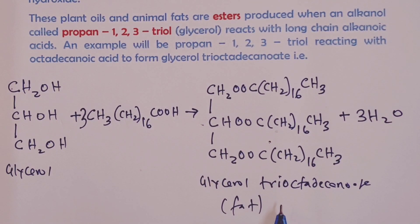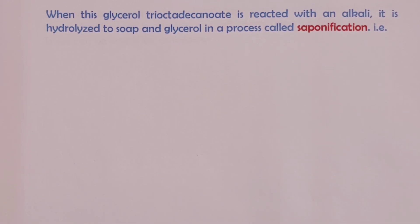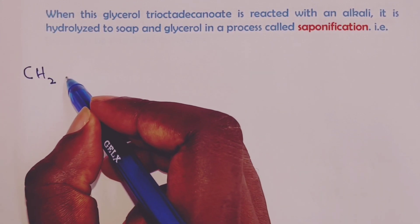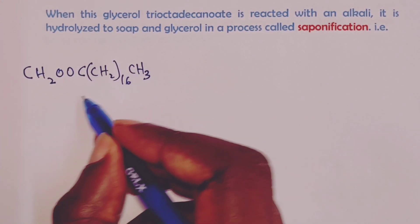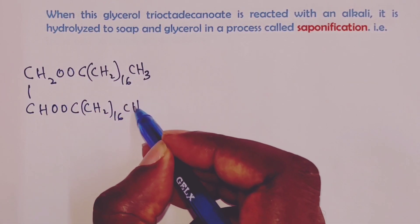Once we obtain our glycerol tri-octadecanoate, we then boil it with an alkali and we obtain a soapy detergent in industry. When this glycerol tri-octadecanoate is reacted with an alkali, it is hydrolyzed to soap and glycerol is recycled in the process that we now call saponification. The reaction begins with our fat: CH2OOC(CH2)16CH3 linked to CHOOC(CH2)16CH3.